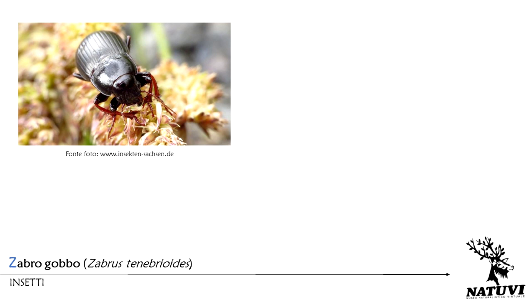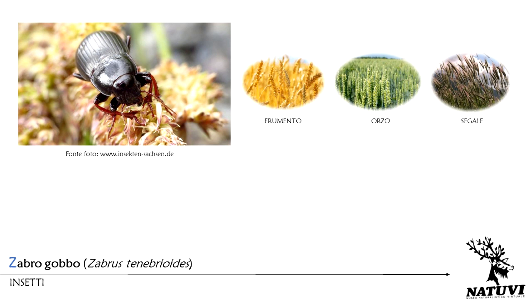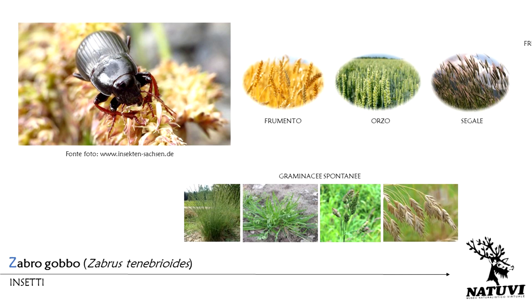La si trova solitamente su piante di cereali, quale frumento, orzo e segale, ma in assenza di quest'ultime possono rinvenirsi anche su graminacee spontanee.